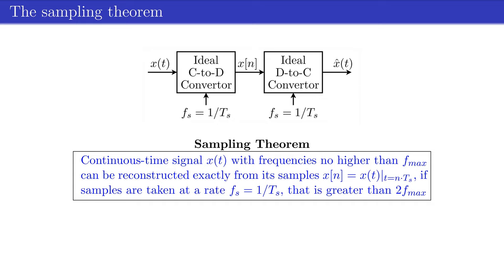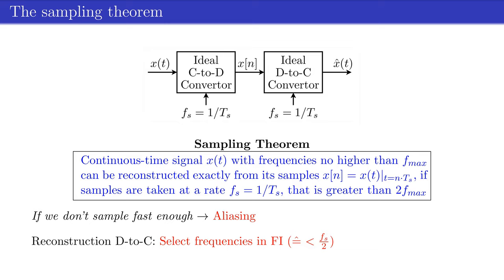When a continuous time input signal x contains frequencies which are all below a maximum frequency fmax, we can reconstruct via d-to-c converter this continuous time signal x without aliasing by its discrete time samples x when the samples are obtained via c-to-d converter which runs at the sample rate fs, which is greater than 2 times the maximum frequency fmax. If we sample at a sampling rate which is too low, we obtain aliasing.